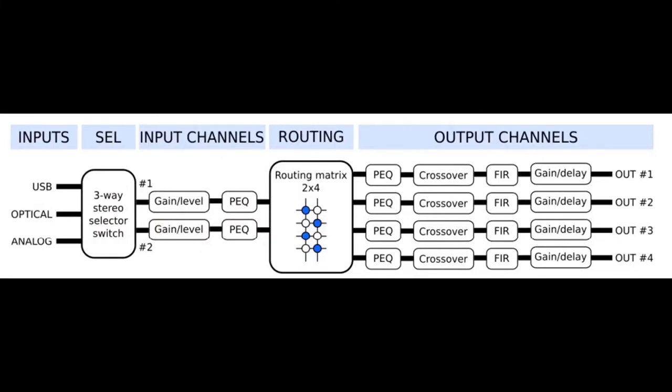The functional block diagram depicts the flow of both digital and analog input signals all the way through the 2x4 HD to its four analog outputs.